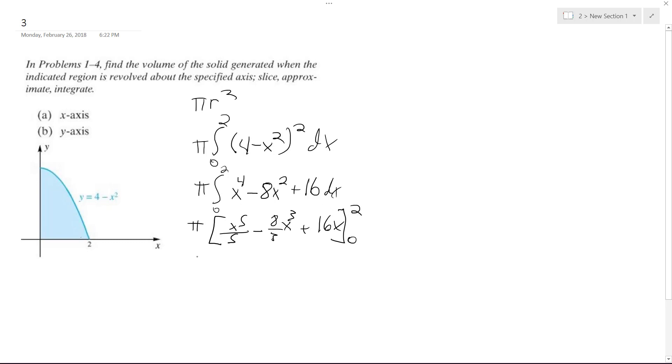All right. So pi times, well, 0 ends up being nothing because when you multiply 0 across all these, you get nothing. So it ends up being pi times 32 over 5 minus 8 times 8, 64 over 3 plus 32. And what you end up with is equal to 256 pi over 15 or approximately 53.6. So that's the x-axis. Okay.